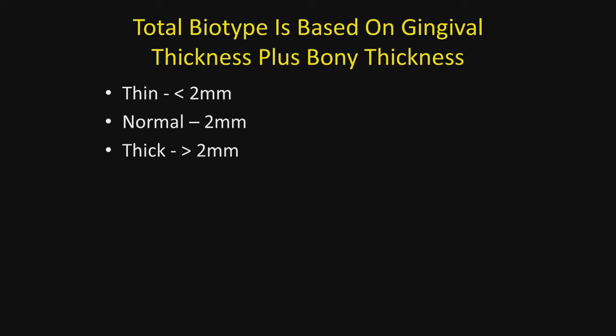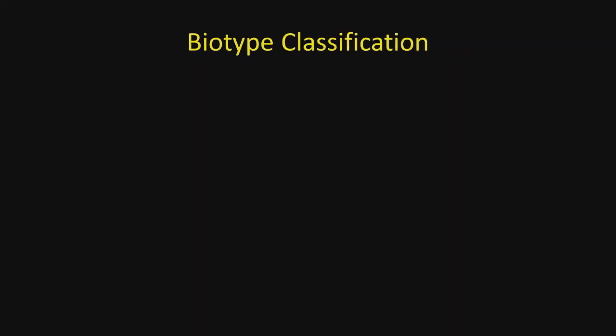The total biotype is based on the gingival thickness plus the bony thickness, and we're striving for a two millimeter thick biotype. If it's thin, it's less than two millimeters. If it's normal, it's two millimeters. If it's thick, it's greater than two millimeters. This is the total of the bony biotype added to the gingival biotype.